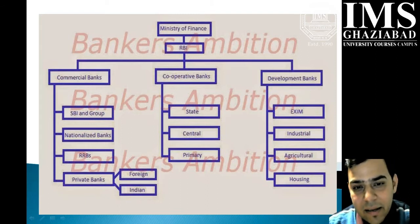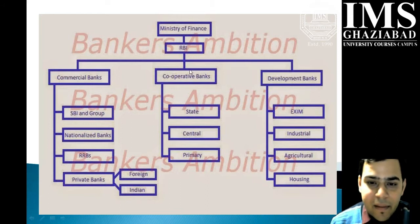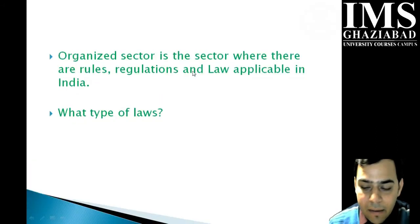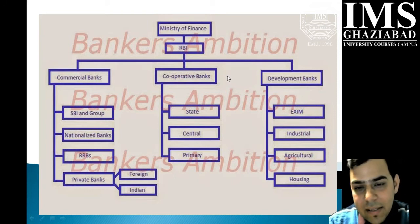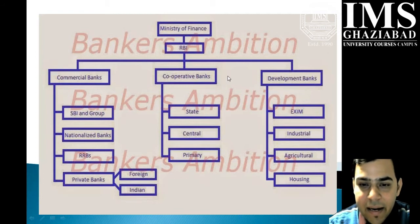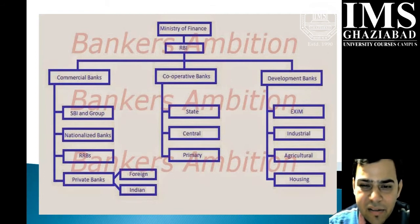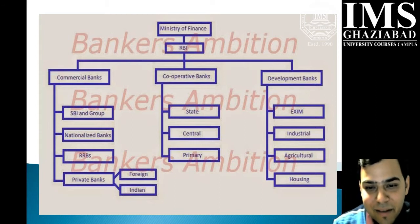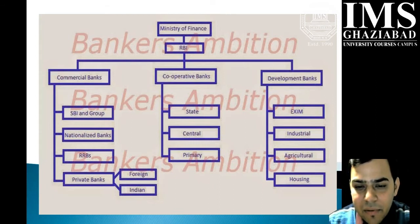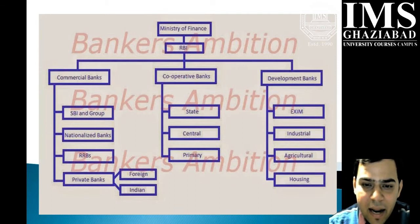The second category that comes into the picture is cooperative banks. Cooperative banks are established under the Cooperative Society Act and are based on mutual cooperation among people. These can also be further divided into three parts: state, central, and primary.